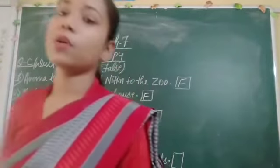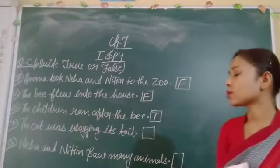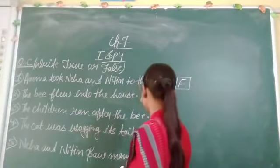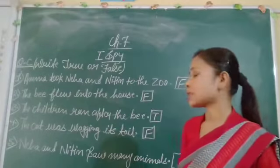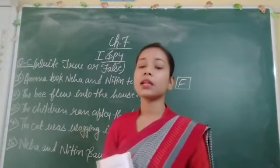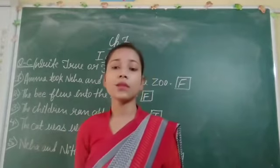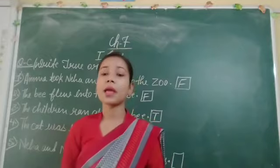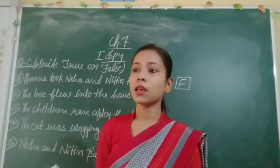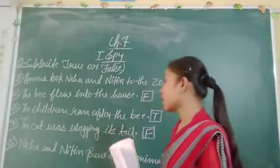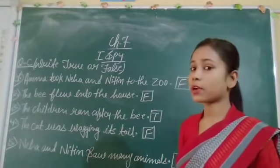Let me see — I'm not sure. This is a false statement; the cat was not wagging. Then we have: Neha and little song saw many animals. Neha and little song saw many animals, but not in the zoo — all around themselves. They saw cows, gai, dogs — so many animals around them. So Neha and little song saw many animals around themselves, not in the zoo.